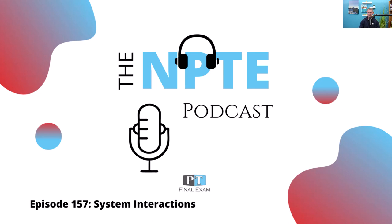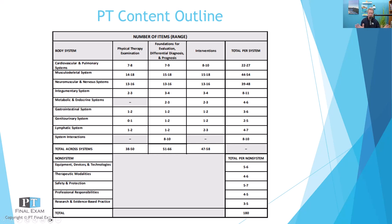Today we'll be going through a practice question related to the system interactions section on the exam. According to the new content outline, updated for 2024, the system interactions section will have somewhere between eight and ten questions on it. This section is exclusively related to differential diagnosis, evaluation, and prognosis — you are taking evaluative data or making differential diagnoses based on something affecting multiple systems. In total, there are 180 scored items with 225 total, meaning 45 are unscored. Cardio, musculo, and neuro continue to be the largest systems on the exam.